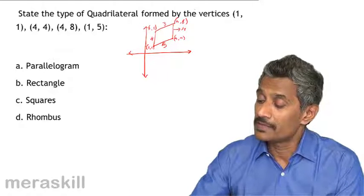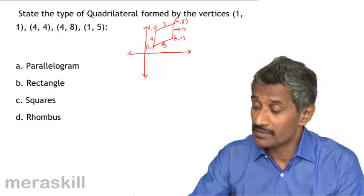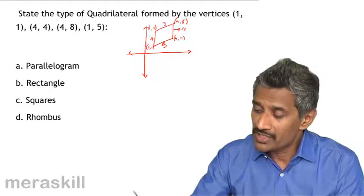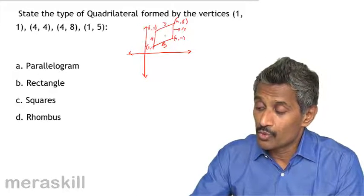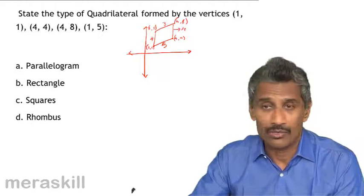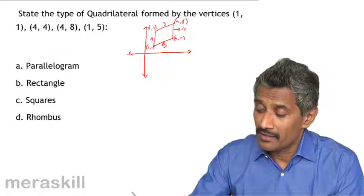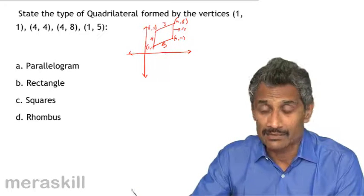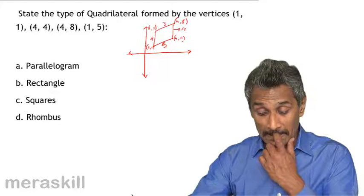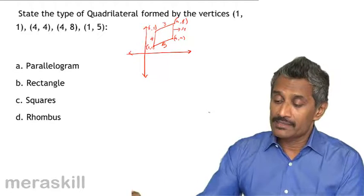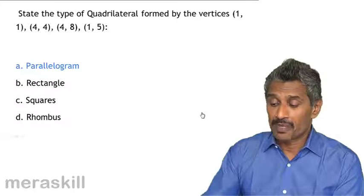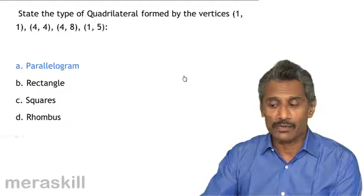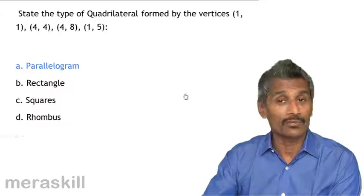The faster way is to find the difference in x-coordinates and y-coordinates of consecutive vertices. You will get pairs like 3 and 3, 4 and 4. If two opposite sides are congruent, it is either a rectangle or a parallelogram. Then check roughly whether any side is parallel to the x-axis — if not, it is definitely not a rectangle. So this is clearly a parallelogram. The conventional way is to use the distance formula, but for MCQs, this coordinate-difference method is much faster.